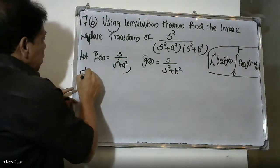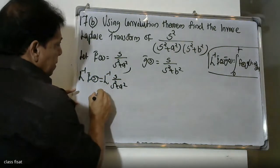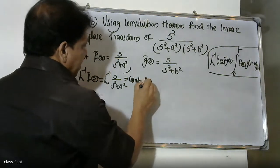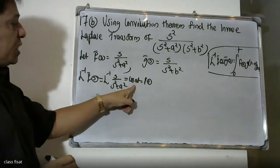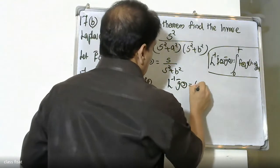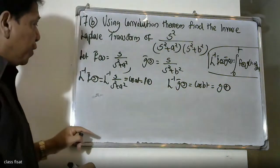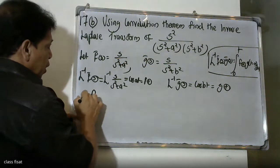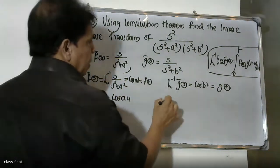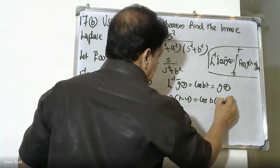Then, the inverse Laplace of F̄(s) gives f(t) equal to cos(at), and the inverse Laplace of Ḡ(s) gives g(t) equal to cos(bt). Therefore f(u) equals cos(au) and g(t minus u) equals cos(b(t minus u)).